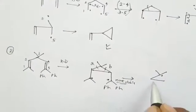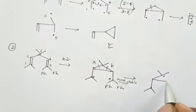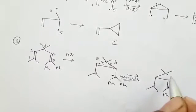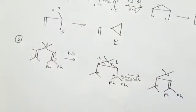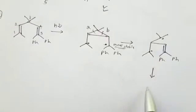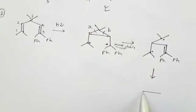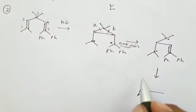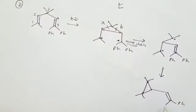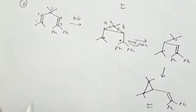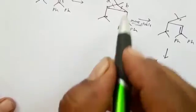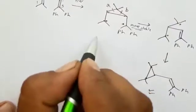Since the Ph radical is more stable, we break at that side — meaning we break path B. After breaking B, we get: this radical, this radical, then methyl, then Ph, Ph, Ph arranged like this. So this is the final product when we have broken the B side.